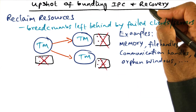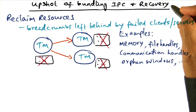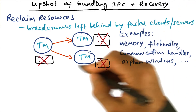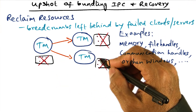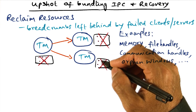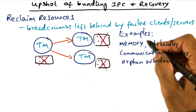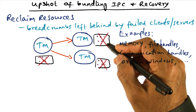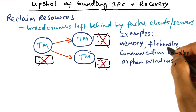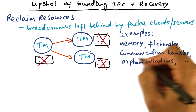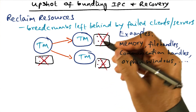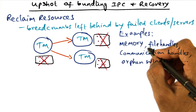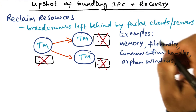The upshot of bundling the IPC and recovery management is that a service can safely collect all the breadcrumbs it left behind in all the places that it touched through the course of its service. Examples of such breadcrumbs include memory that was allocated but not reclaimed, file handles, communication handles, or orphan windows that have been created on the display — all breadcrumbs that may have been left behind by failed clients or servers.